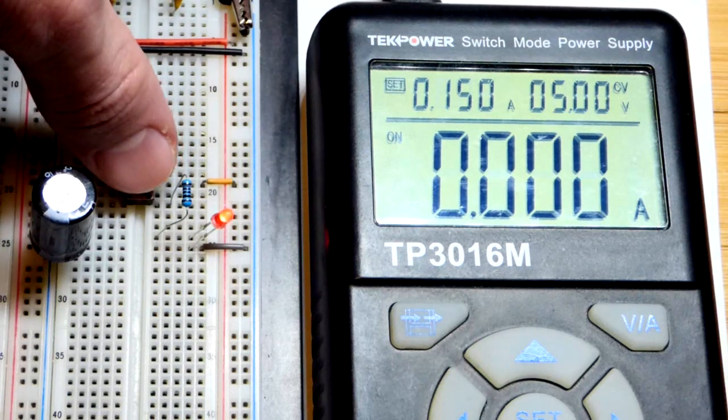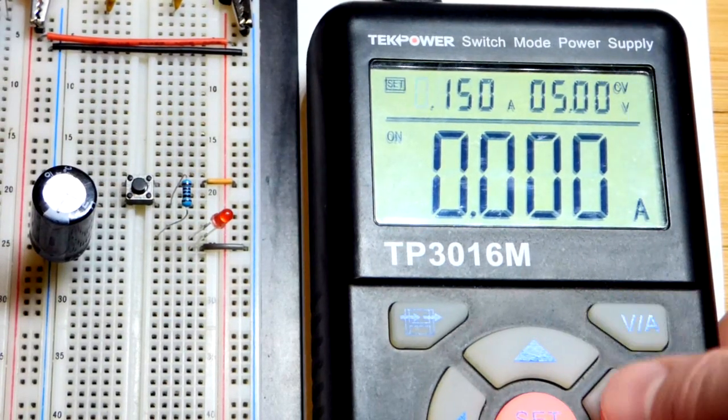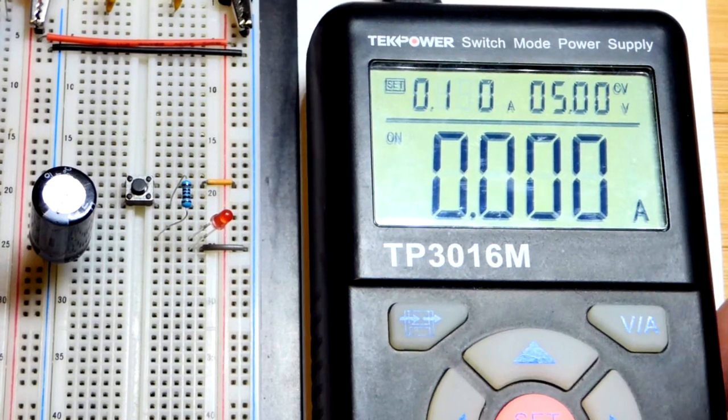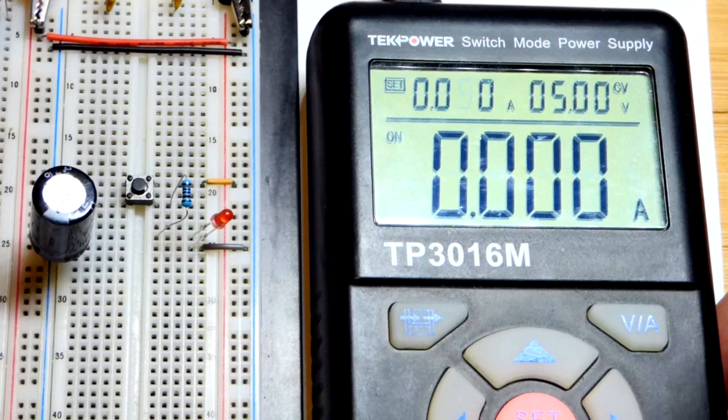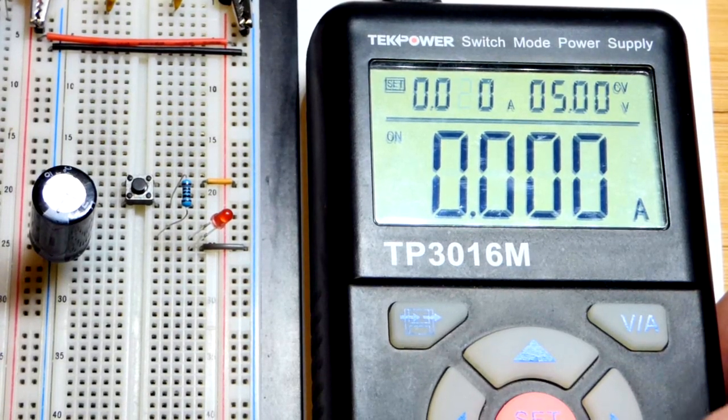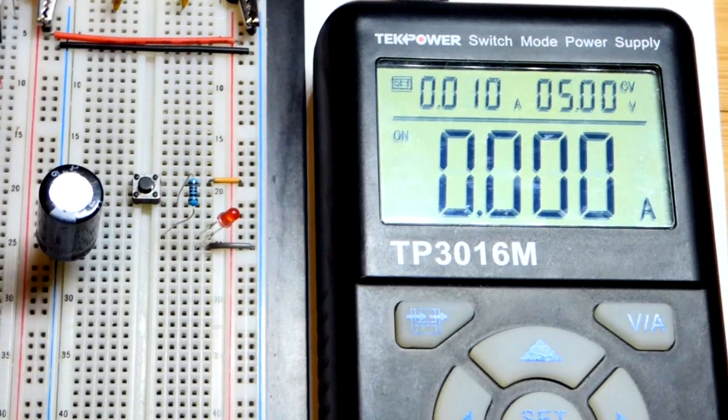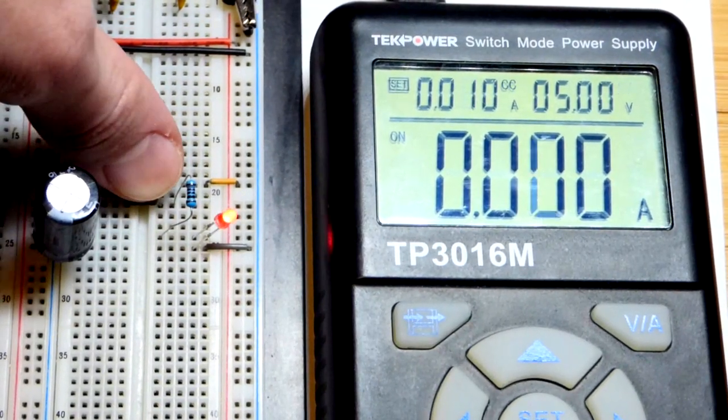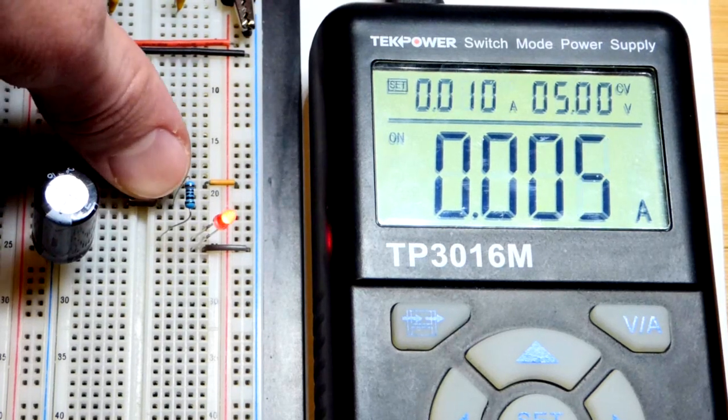So let's do that. It looks like 150 milliamps is probably pretty good, so 0.15 amps. Let's go down. We only need like a couple milliamps to light the LED, so let's go to a pretty extreme of 10 milliamps total. So remember, we also have to charge the capacitor.